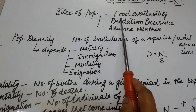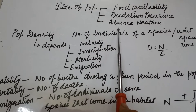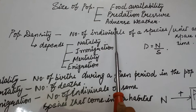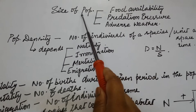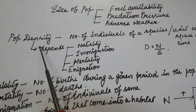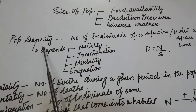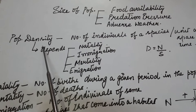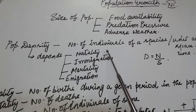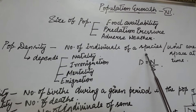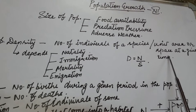First is availability of food, predation pressure, and adverse conditions. With this, we can understand the size of population — that is, the density of a population. Density of a population is measured in terms of number of individuals or species per unit area or space at a given time.